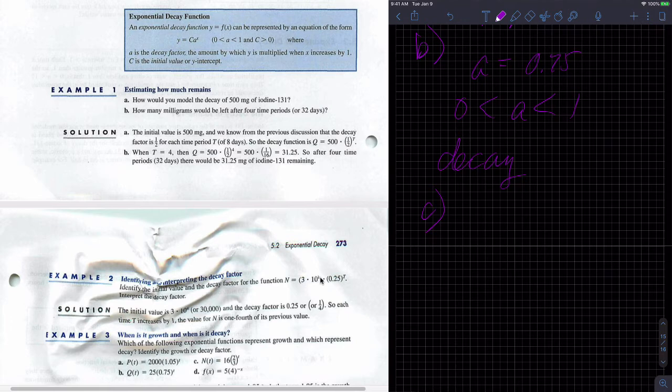C, N of T equals 16 times 2 thirds to the T. So our A value, our factor, is equal to 2 thirds. And since A is less than 1 and greater than 0, then this is exponential decay.